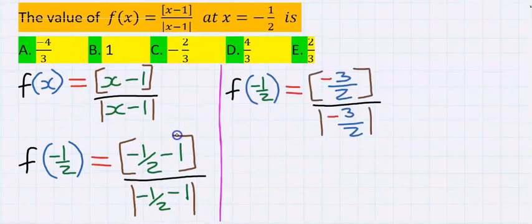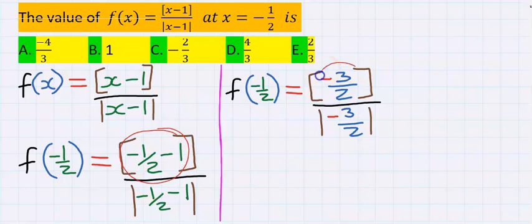Next, if you solve the numerator carefully, you're going to get minus 3 over 2, which is the same as the denominator, minus 3 over 2.